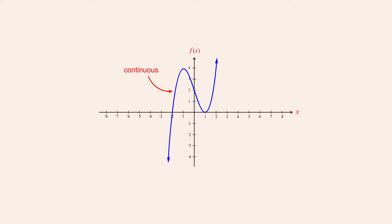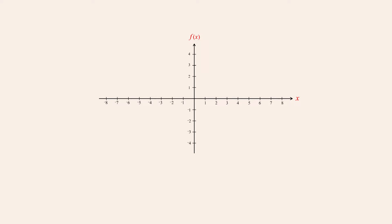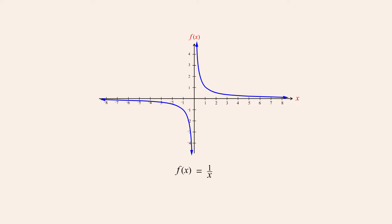Functions that are not continuous are said to be discontinuous, and there are a number of ways that a function can be discontinuous. Take, for example, the function 1 over x. This function is discontinuous at an x value of zero — at that point there is a break in the graph called a discontinuity. When the values of x are small, the function 1 over x is large. It grows infinitely positive as x approaches zero from the right, and infinitely negative as x approaches zero from the left. When x is zero, the value of one divided by zero is undefined, so the function's domain includes all values of x except zero.